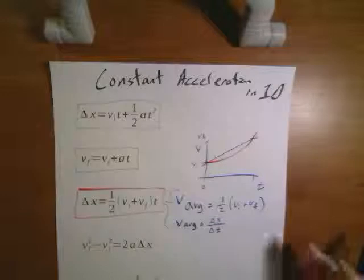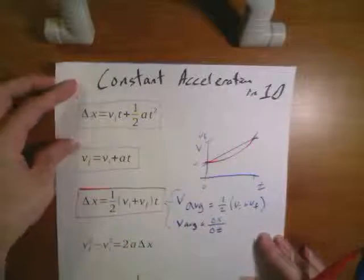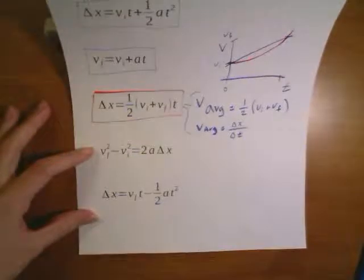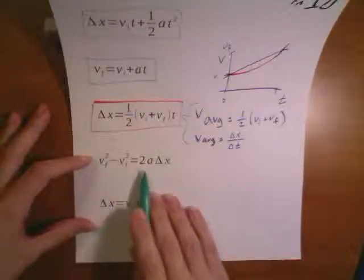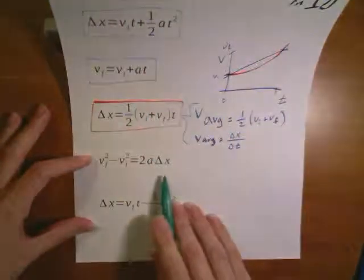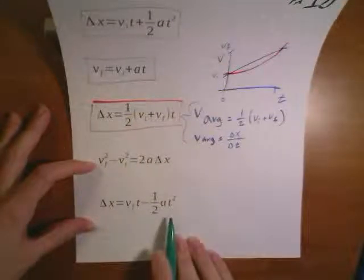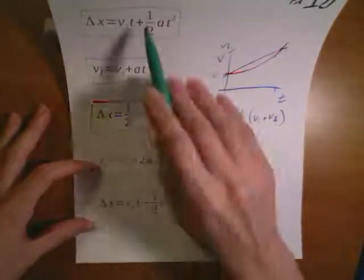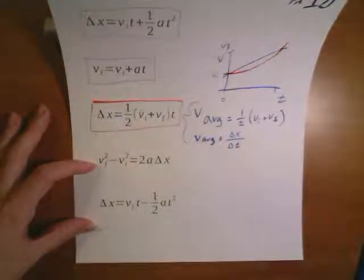There are a couple other equations that are used, and whether you see all five of these or just four depends a little bit on the textbook you use. But these last two are really just algebraic combinations of the first three. We can take these equations and eliminate one of the unknown variables — in this equation we don't have time, and in this equation we don't have the initial velocity. If we take these three equations and do some simultaneous solutions, we get this sort of answer.